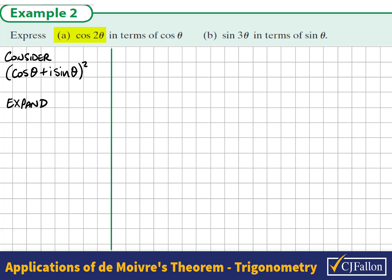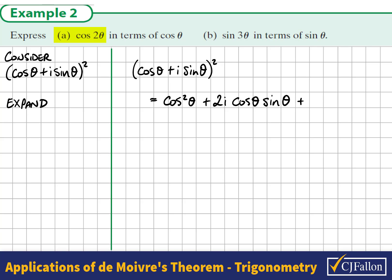We could expand this by multiplying it by itself. When we multiply a binomial by itself, we square the first term — that becomes cos²θ — then multiply the two terms and double it, giving 2i cosθ sinθ, and square the second term to get i² sin²θ. Remember i² is negative 1, so that becomes negative sin²θ.